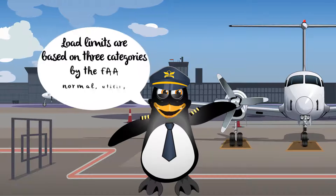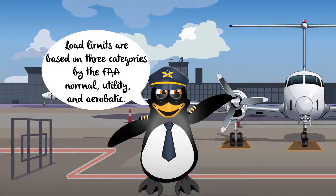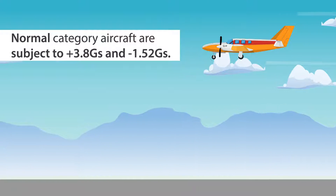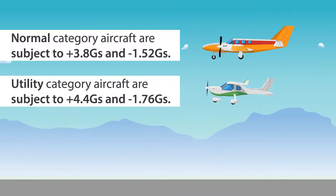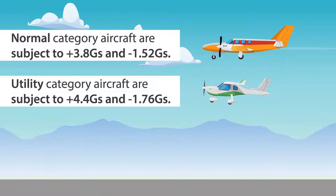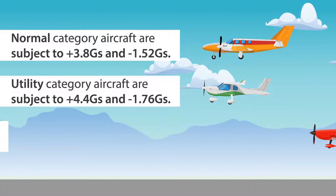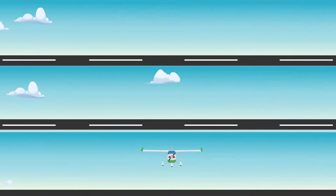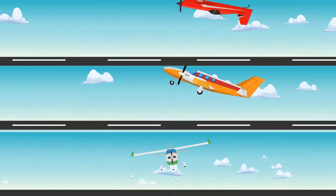Load limits are based on three categories by the FAA — Normal, Utility, and Aerobatic. Normal Category Aircraft are subject to plus 3.8 Gs and negative 1.52 Gs. Utility Category Aircraft are subject to plus 4.4 Gs and negative 1.76 Gs. Aerobatic Category Aircraft are subject to plus 6 Gs and negative 3 Gs. The differences between the categories are based upon the types of flight maneuvers the airplane is approved to perform.